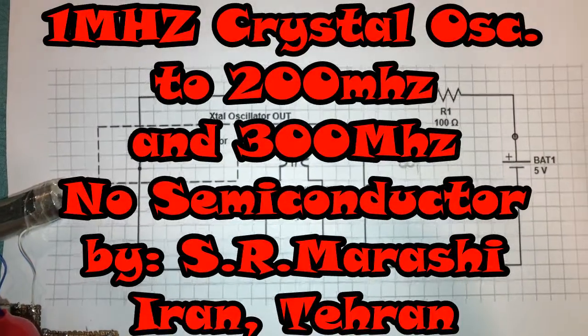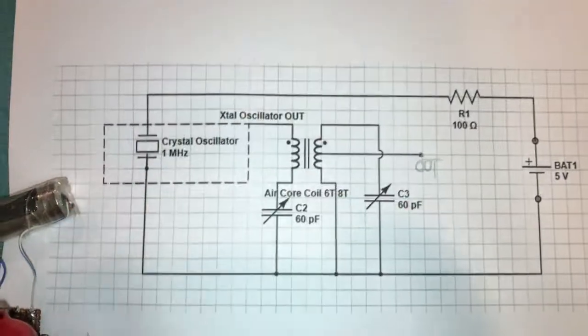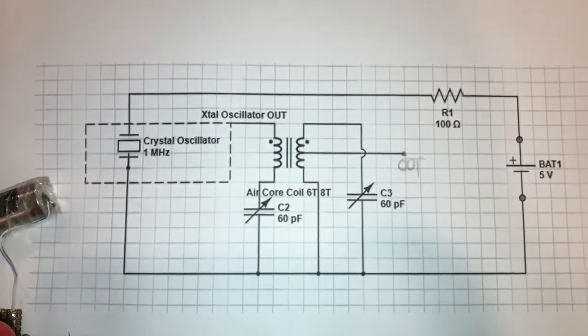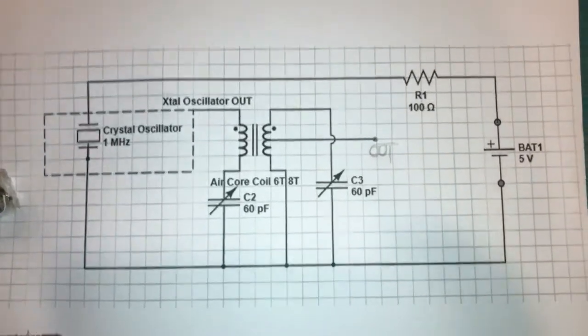Hello guys and thanks for clicking this video. This project is a 1 megahertz crystal oscillator multiplier to 200 and 300 megahertz.